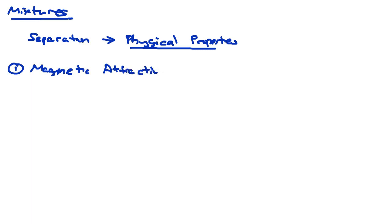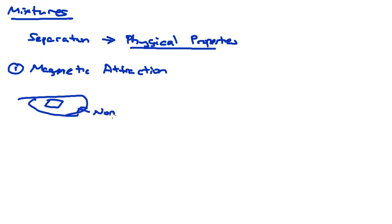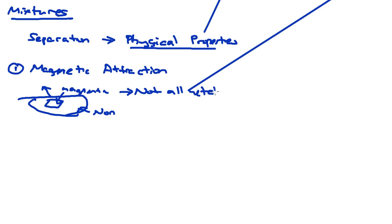The first method is magnetic attraction. This makes use of the physical property of magnetism to see whether an item is magnetic or not. For example, if you have a piece of metal within a pile of sand, because the sand is non-magnetic and the metal is magnetic, you can use a magnet to attract the metal away from the sand. Note that not all metals can be attracted to a magnet.